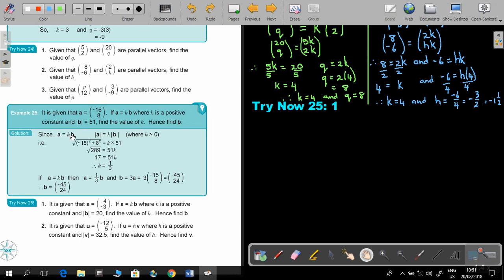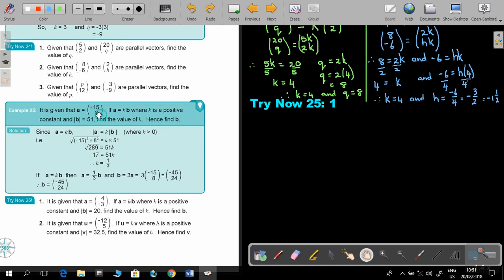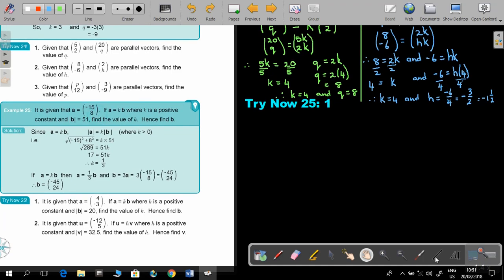Now, since A equals KB, I can say that the magnitude is equal to K times this magnitude. So, I make from this statement, comes this statement. And, K must be bigger than 0. Now, I work out the magnitude of A. Because I have A. Because I have A, I work out.